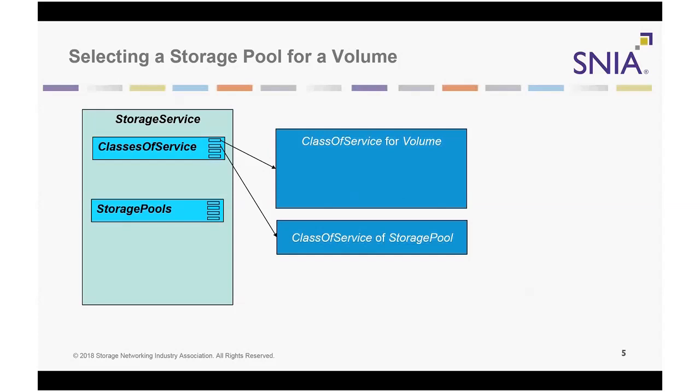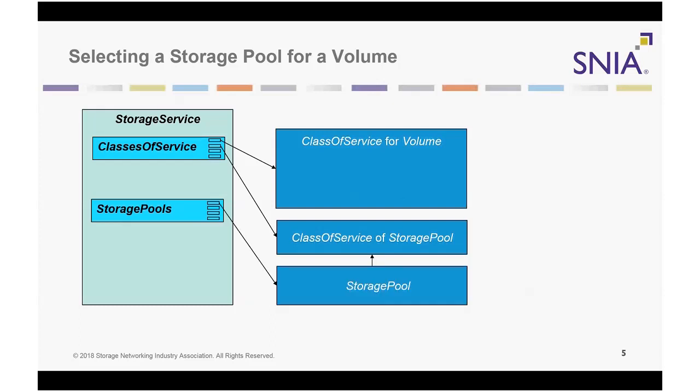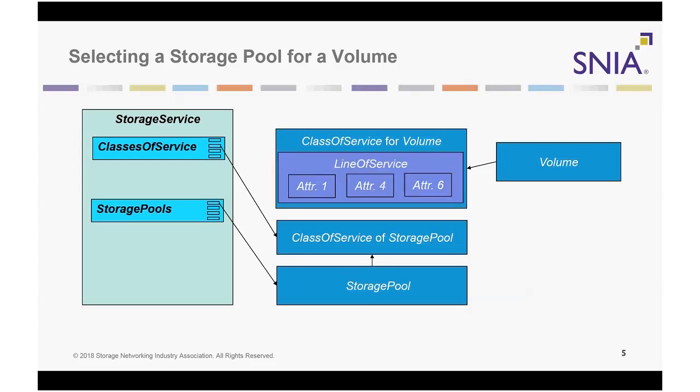Each storage service advertises the classes of service that the implementation can support. Storage pools advertise classes of service for storage that can be created from the pool. Volumes and file systems advertise classes of service that specify the level of service they are expected to provide. Classes of service may be incomplete in that some line of service attributes may not be specified. Implementations may allocate storage from any storage pool that supports the requirements in the class of service called out by the volume, if any.